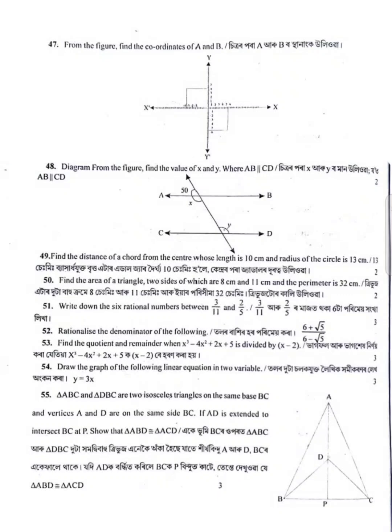Then geometric progression and rational numbers. Find the quotient and the remainder when x cubed minus 4x squared plus 2x plus 5 is divided by x minus 2.